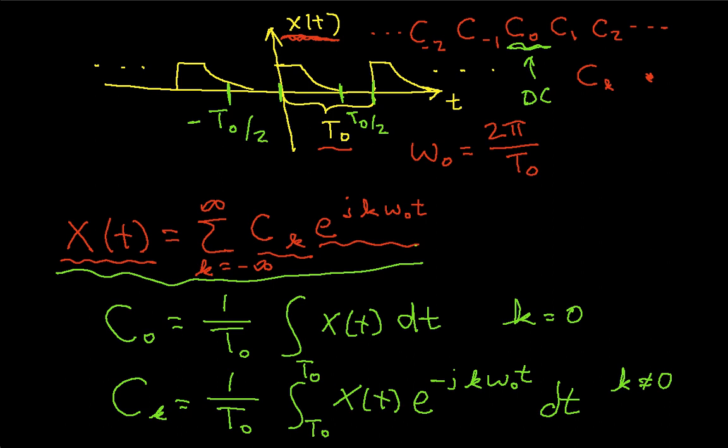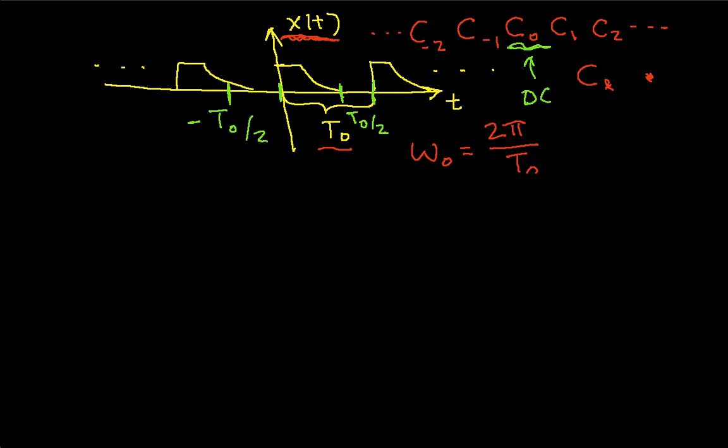It turns out that the c sub k's are generally complex in the sense that they have a real and an imaginary part. So let me tidy up a bit here and we'll talk just a little bit about what this means. Since c sub k is complex, I can talk about it having a real part and an imaginary part, which I'll call alpha and beta. So alpha k is the real part of c sub k and beta k is the imaginary part.